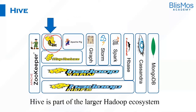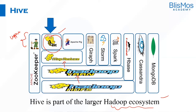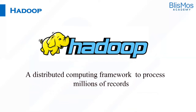Hive is part of the larger Hadoop ecosystem. We have HDFS at the base, on top of that YARN, on top of that MapReduce, and Hive sits in the top layer. Components in the upper layer are for interactivity, so we can easily understand that Hive is for interactivity.